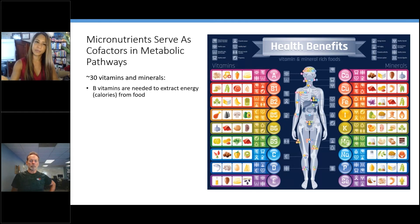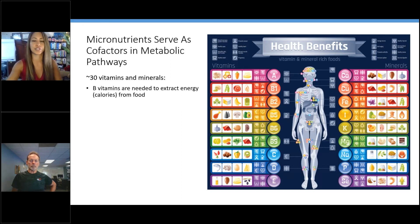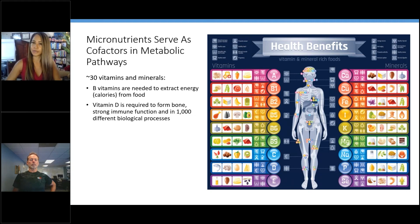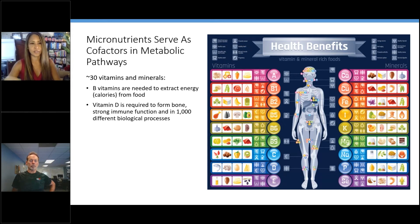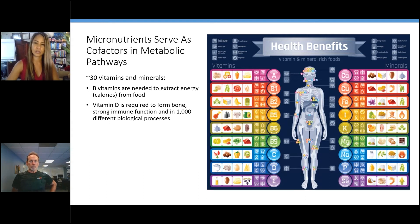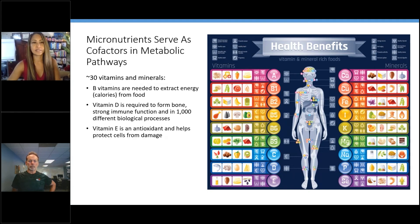This infographic shows some examples of what vitamins and minerals do. We need B vitamins to extract energy from food — you've probably heard that B vitamins give you energy, and yes, you need them for that. Vitamin D, which we've heard a lot about during COVID, is needed to form bone and to support your immune system to have the appropriate response to fight off a virus or bacteria. Vitamin D actually acts more like a steroid hormone — it affects about a thousand different biological processes, roughly a fifth of the human genome.